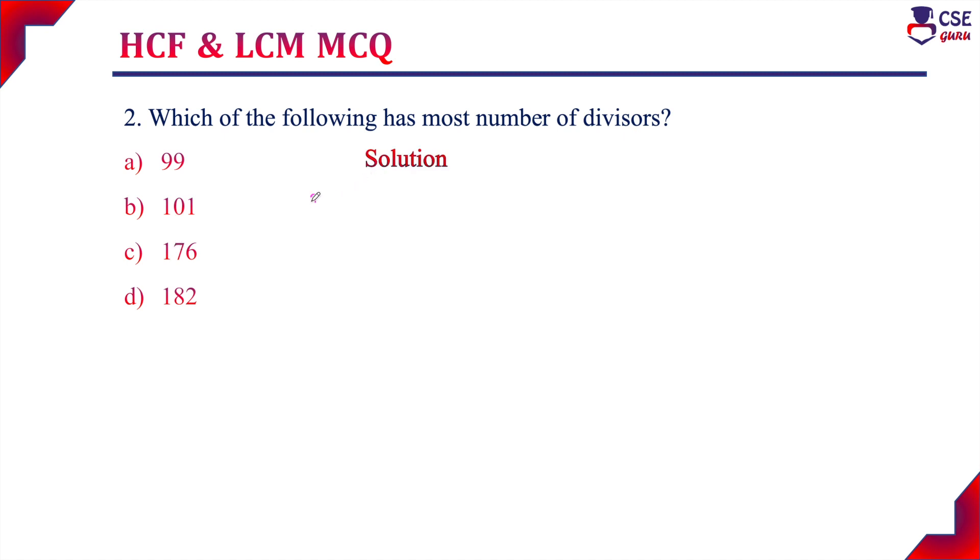First, we'll consider option A, 99. The possible divisors for 99 are: 1, 3, 9, 11, 33, and finally the number itself, 99.